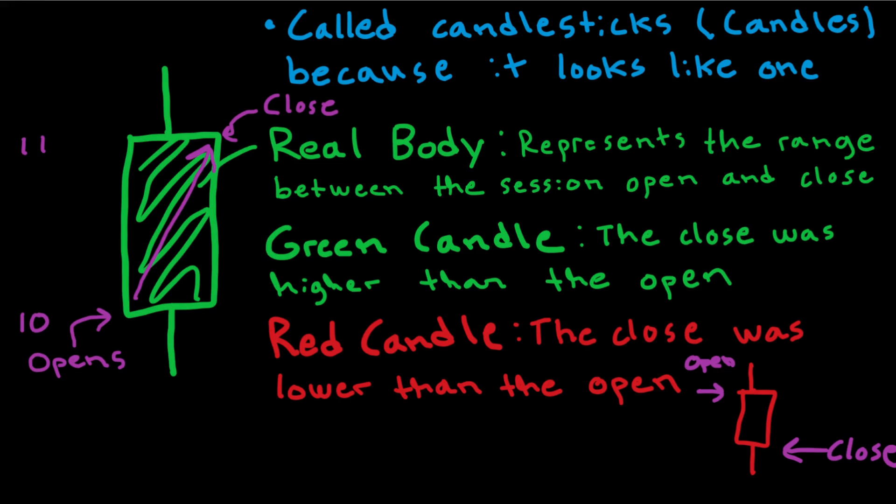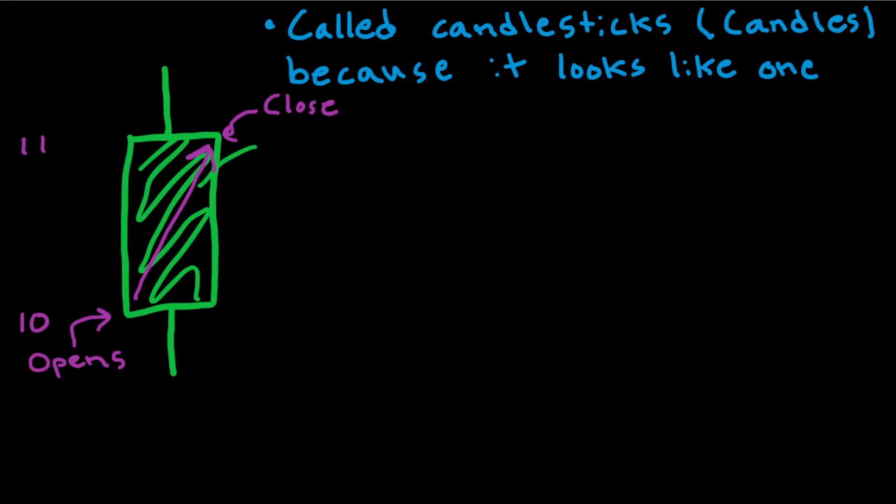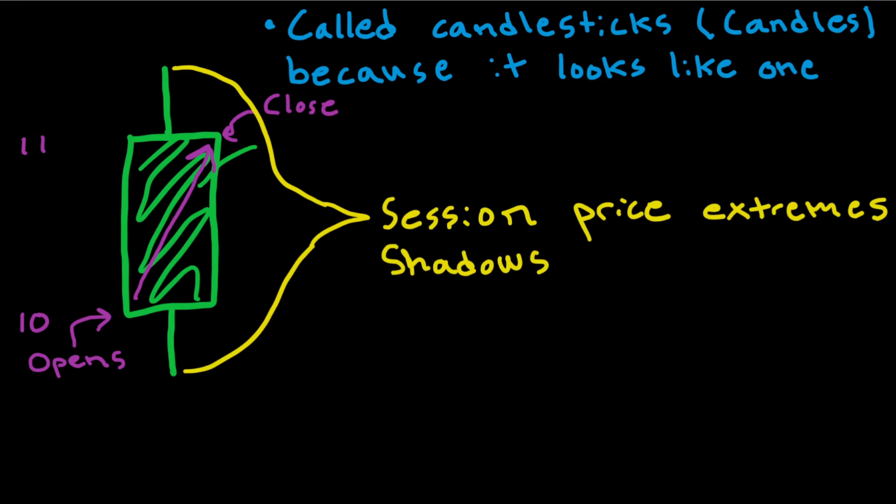So this is basically what the color of the different candle means. Alright, so now I'm going to erase some stuff here. I'm sorry about that. Now you probably wonder what these little lines here mean. Both of these lines are called session price extremes. And these have a name. They are called shadows. The upper small line here is called the upper shadow.